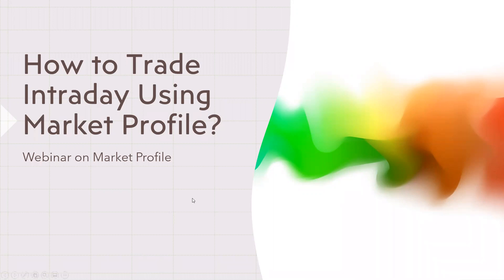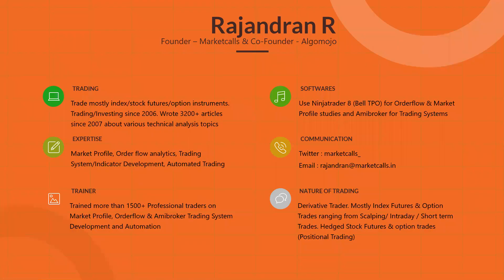Without any further delay, let me get into the session. My name is Rajindran. I'm the founder of Market Calls and co-founder of Algo Mojo. I've been trading this market since 2006, and my core expertise covers three topics: automated trading, market profile, and order flow. I've been actively practicing market profile and order flow since 2012, and automated/systematic trading since 2009.